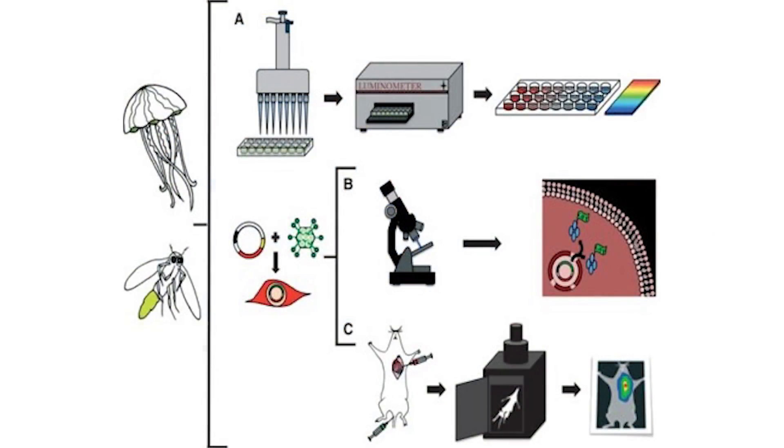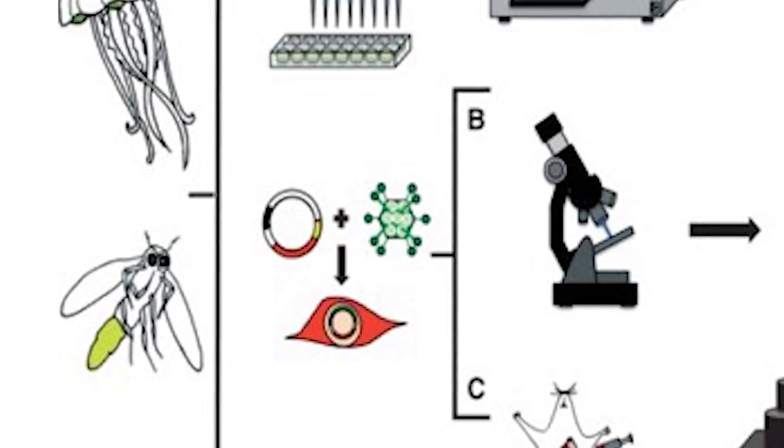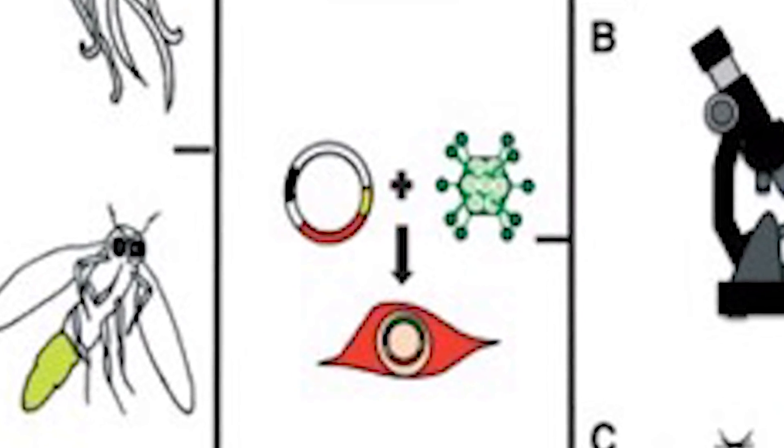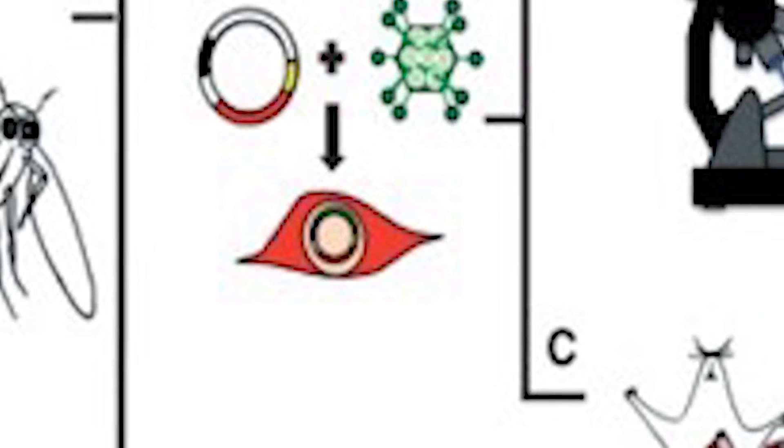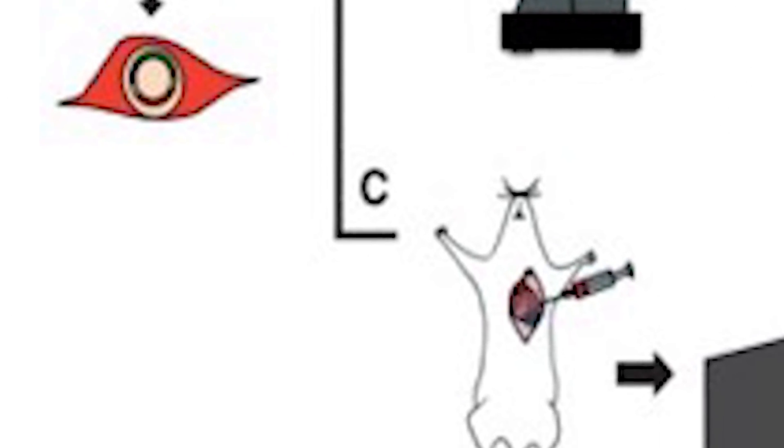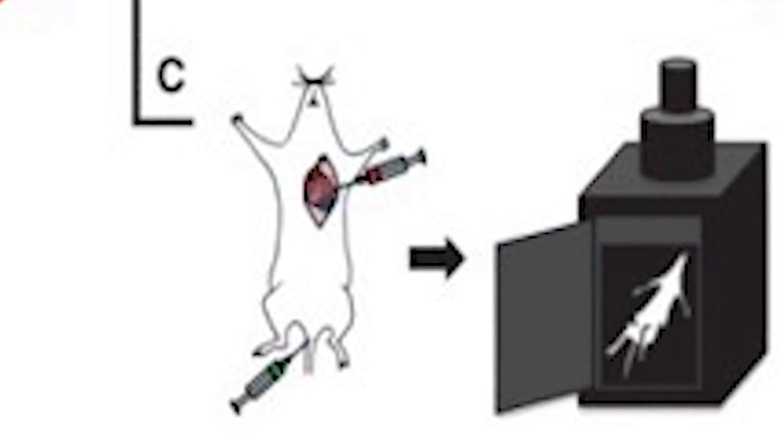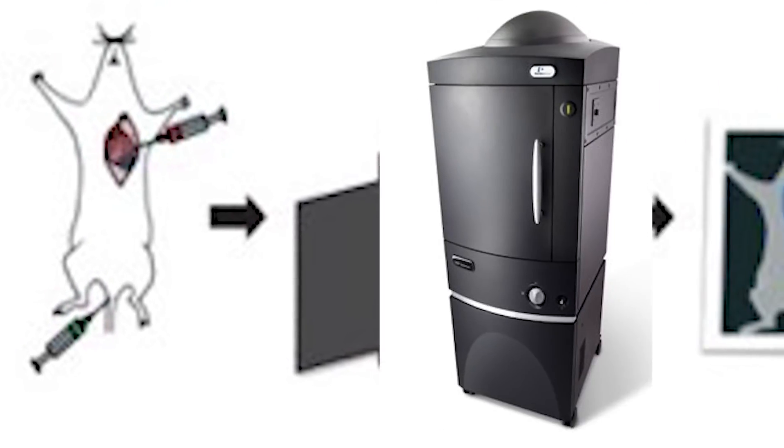The imaging method generally involves tagging cells of interest with particles containing the luciferase protein. These cells are injected into an animal specimen and allowed to propagate, and the luciferin substrate is injected soon after. The luciferin activates the luciferase, and the emitted light can be seen with the highly sensitive charge-coupled device camera, otherwise known as the CCD.